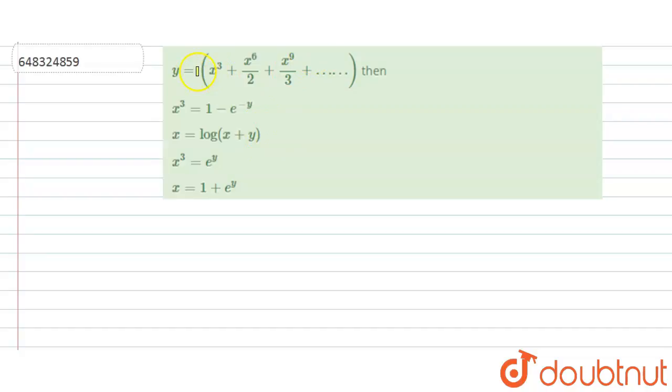Hello all, today we have a question where we need to find the value if y equals the given expansion: x cubed plus x to the power 6 by 2 plus x to the power 9 by 3 plus so on to infinity. Then which of the following condition holds true for this given expression? We have four options and we need to find which one is correct.